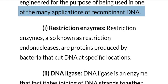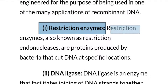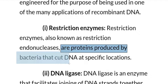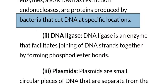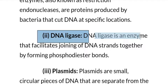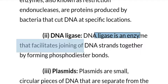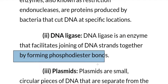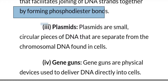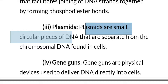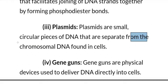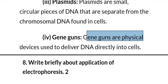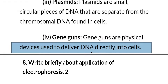List the tools of genetic engineering. First is the restriction enzyme, also known as restriction endonuclease — proteins produced by bacteria that cut DNA at specific loci. Next is DNA ligase, an enzyme that facilitates joining of DNA strands by forming phosphodiester bonds. Next is plasmid — small circular pieces of DNA separated from chromosomal DNA found in cells. Next is the gene gun — a physical device used to deliver DNA directly into cells.